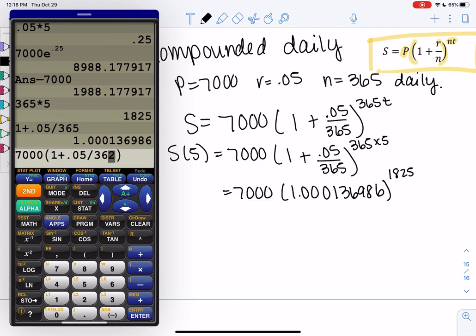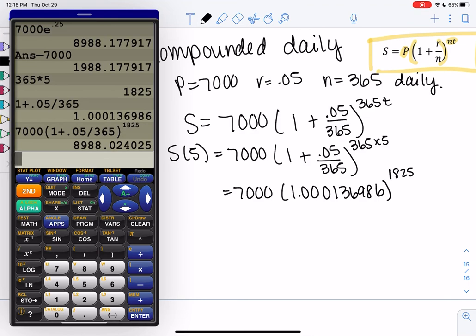So if you have a calculator with parentheses, we'll do 7,000 parentheses 1 plus 0.05 over 365, all to the 1825 power. And we get 8,988 and 2 cents.